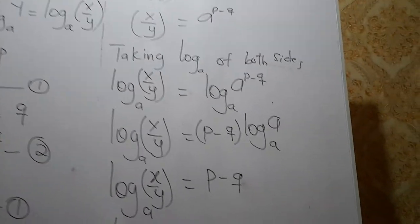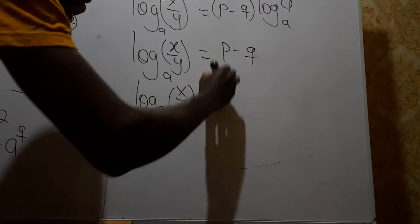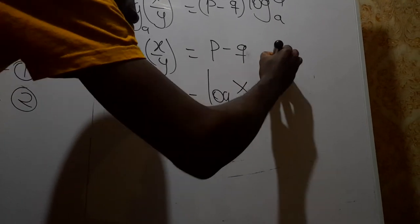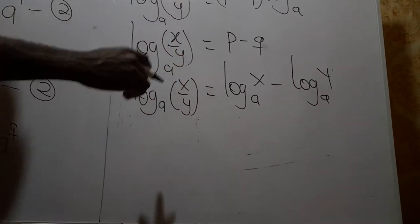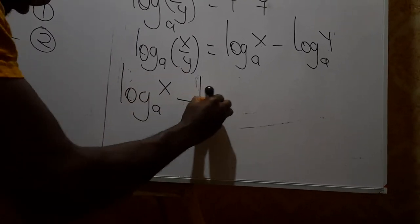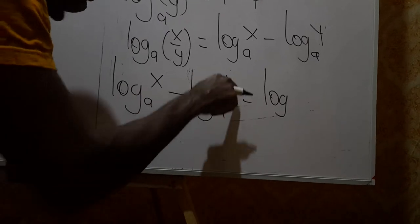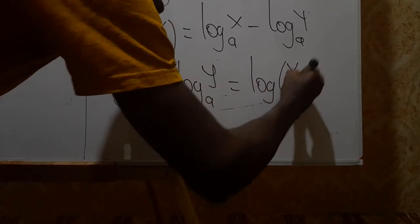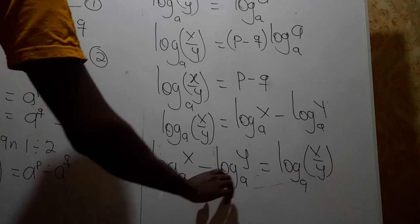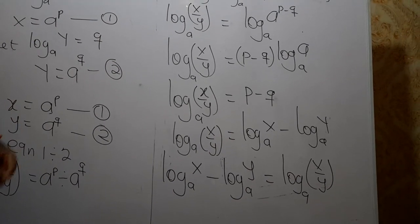Since log(x/y) base a equals log x base a minus log y base a, we can write: log x base a minus log y base a equals log(x/y) base a. We are able to prove that when two logarithms are subtracted with the same base, we can divide them and repeat one of the bases. Now let's prove the third law.